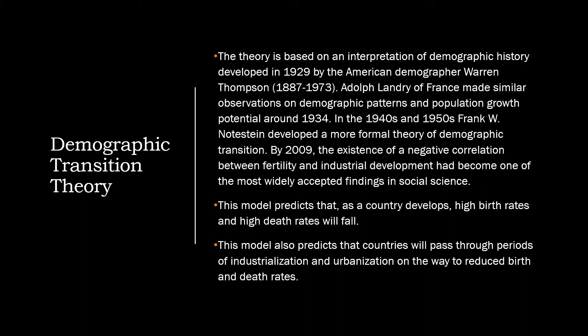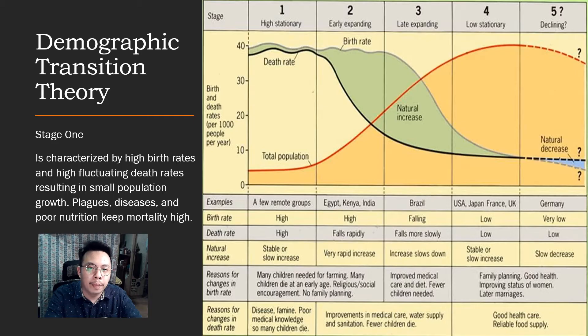This model predicts that as a country develops, high birth rates and high death rates will fall. It also predicts that countries will pass through periods of industrialization and urbanization on the way to reduced birth and death rates. The demographic transition theory has five stages, and referring to the graph on screen will help illustrate each stage.